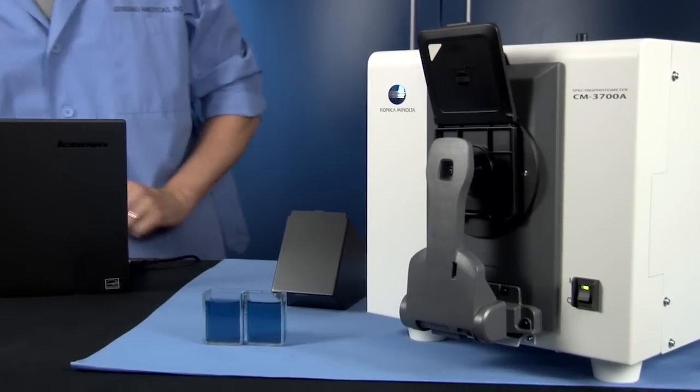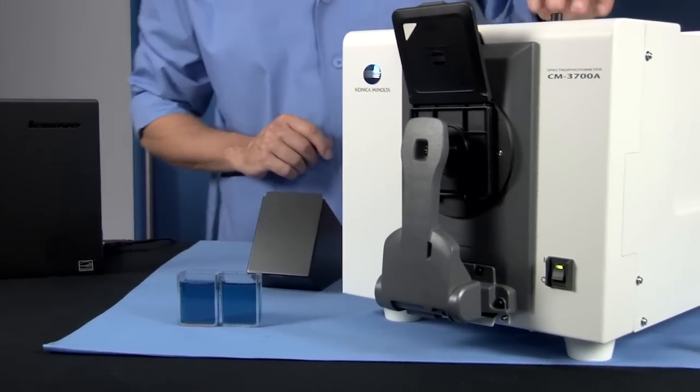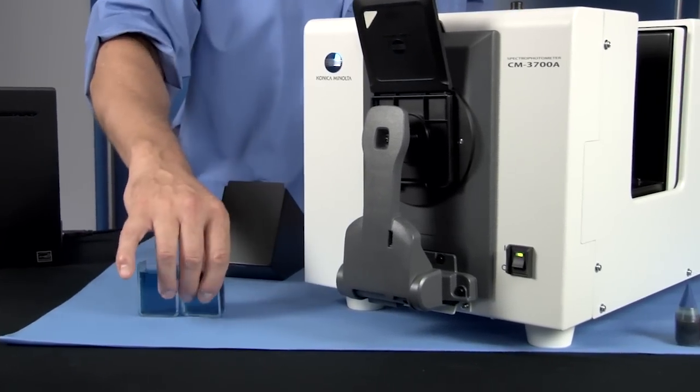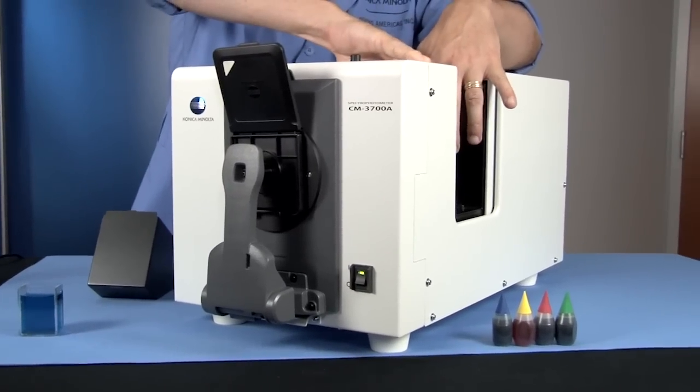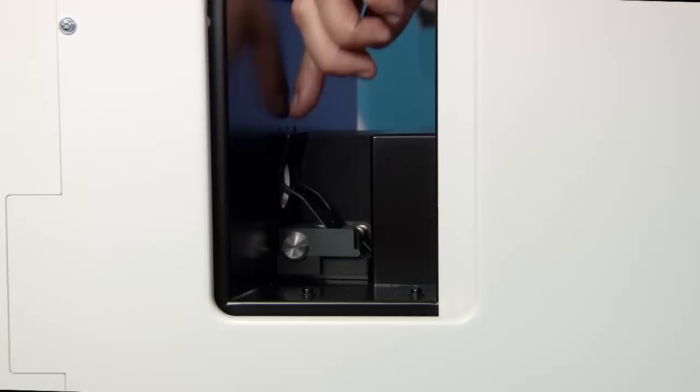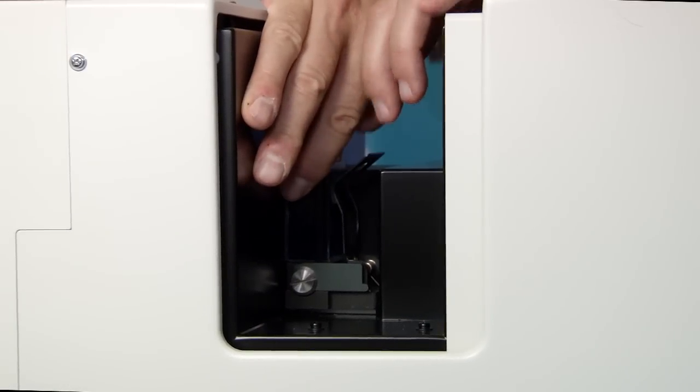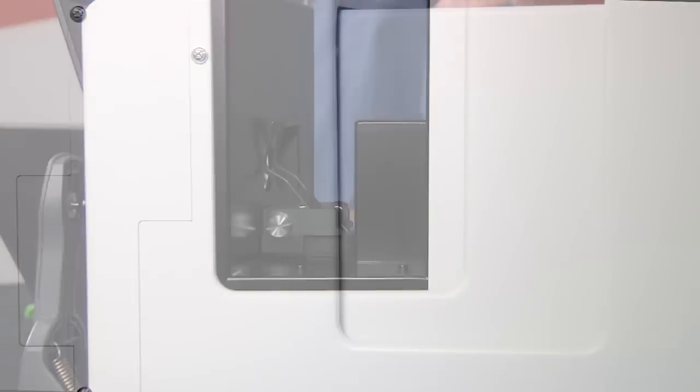The versatile CM3700A is built with comprehensive measurement functions. Measurements made in SCI or specular component included mode are unaffected by surface conditions, ideal for use in color formulation and computer color matching procedures.